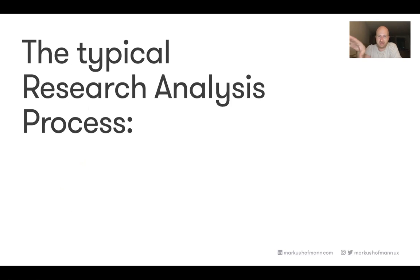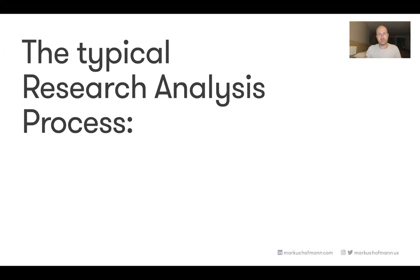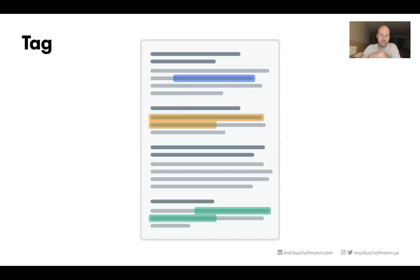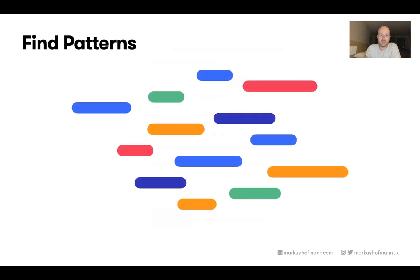What is the typical research analysis process? When you do research, you go out and do your interviews, focus groups, usability testing — whatever it might be. You end up with a transcript, then you highlight certain areas in that transcript and tag them. You end up with a bunch of highlights with all kinds of different tags — basically a huge mess.